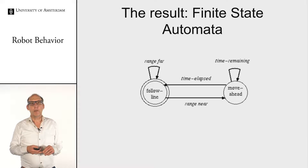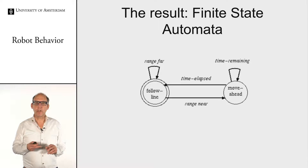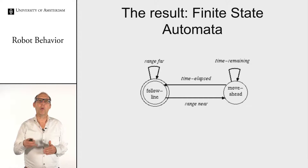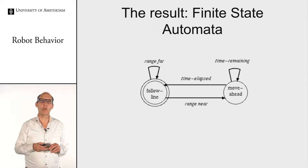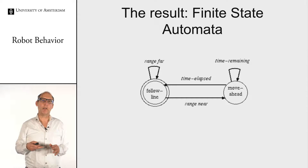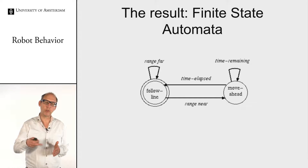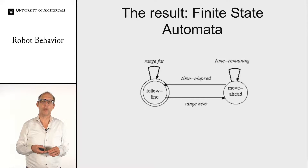Each time you see finite state automata — rule-based structures that specify conditions and what controls should be given, with transitions from one state to the other. These are augmented finite state automata because a timer is also involved. That timer is part of the subsumption signal to only overrule the lower behavior for a certain time; once elapsed, you jump back to the previous state.